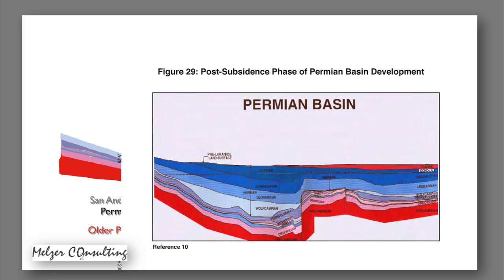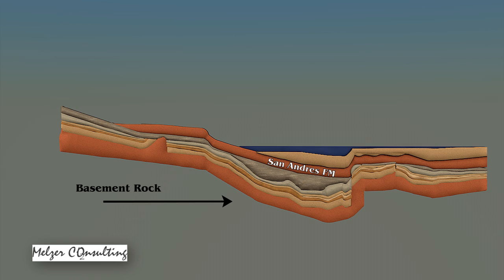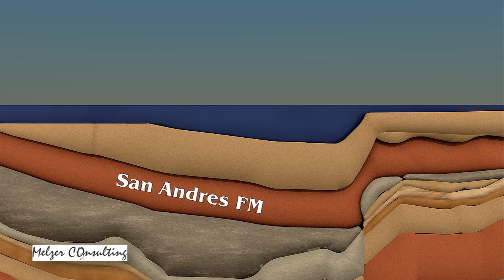The way it was in the geologic past is not how it is at present, and so what we try to do with this animation is recreate that for you. This is our idealized cross-section showing the Basin in its early tectonic stage in early Permian time, and then we cut out a section of that because we're going to concentrate on that in the first part of this animation.